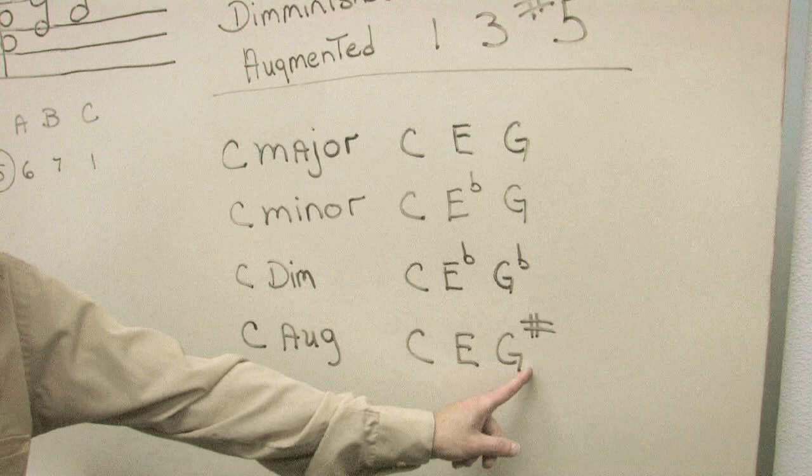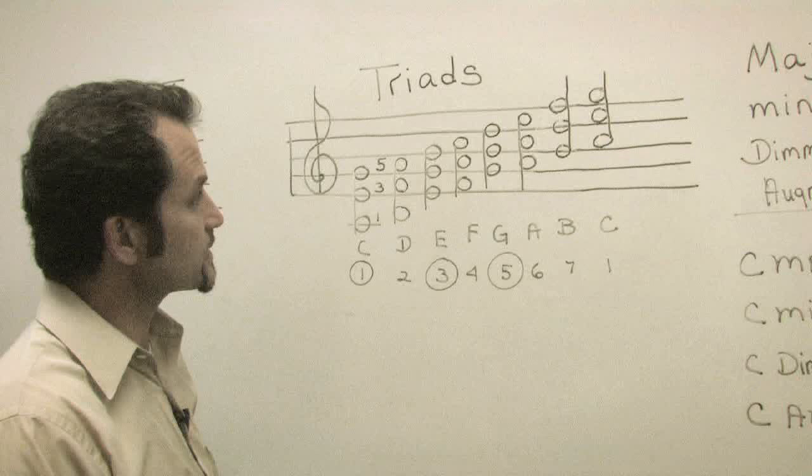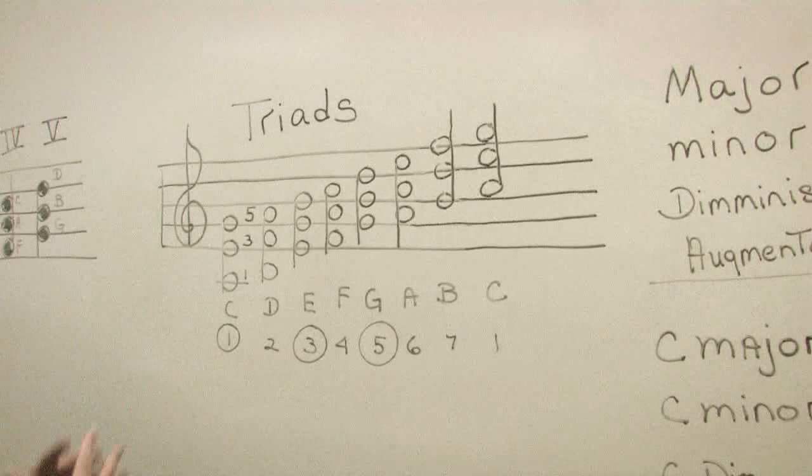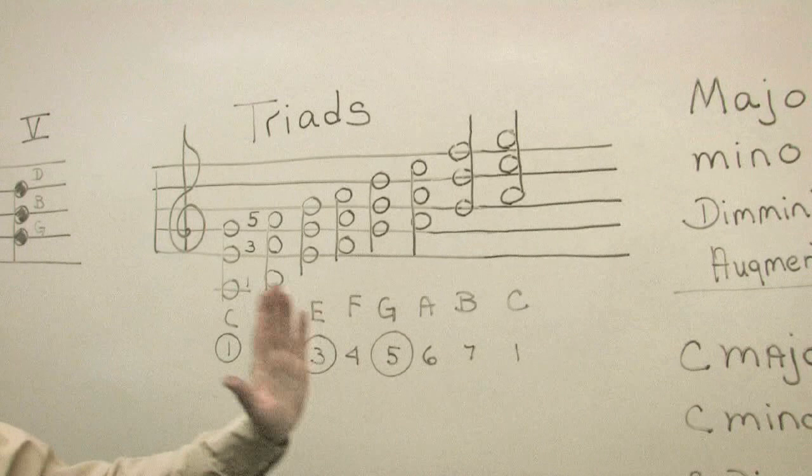Now I've written out on every degree of the C major scale a triad of each note, starting on each note. So every chord that I've written in this scale is always every other one on the staff, and it's always three notes, which makes it a triad.